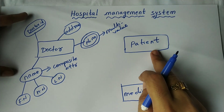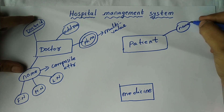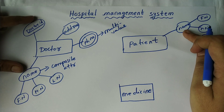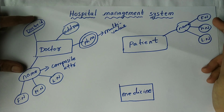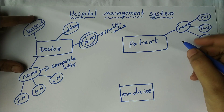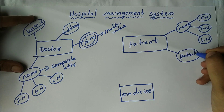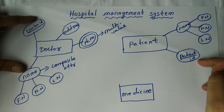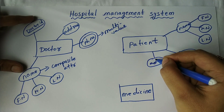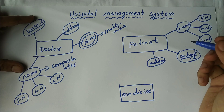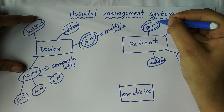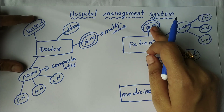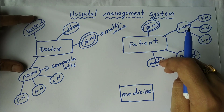For the entity Patient, the attributes are: Name — a composite attribute divided as first name, middle name, and last name. Patient ID, which must be underlined as it is a primary key and unique for each patient. Address, and Phone Number — written inside a double oval because it is a multi-valued attribute, since a patient can have more than one phone number.